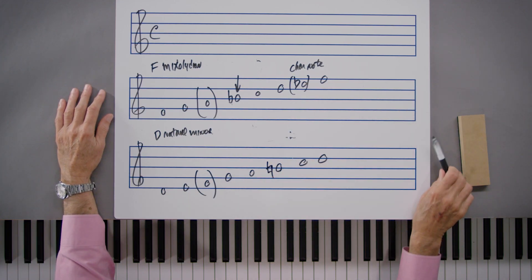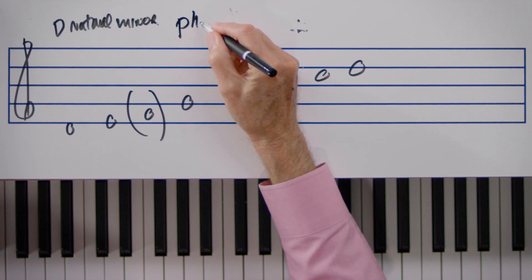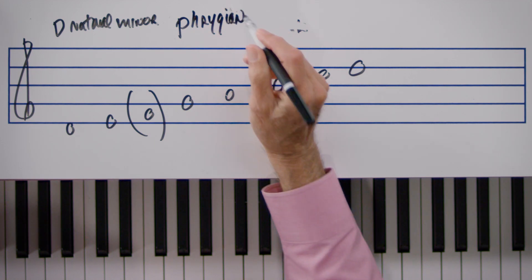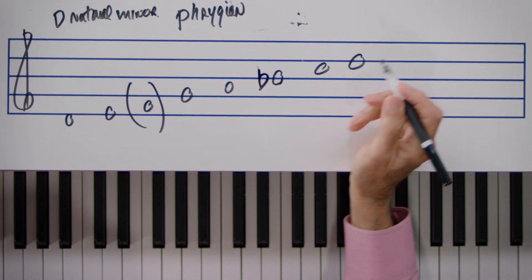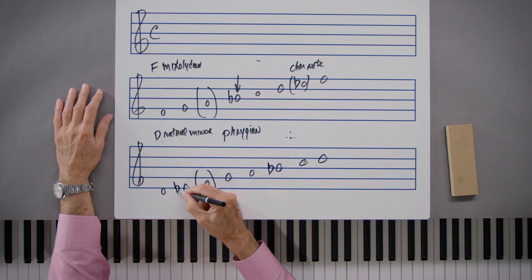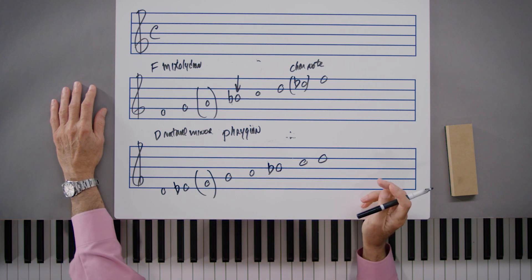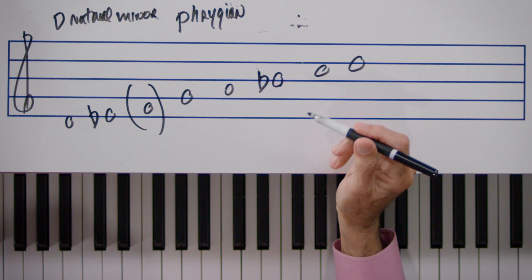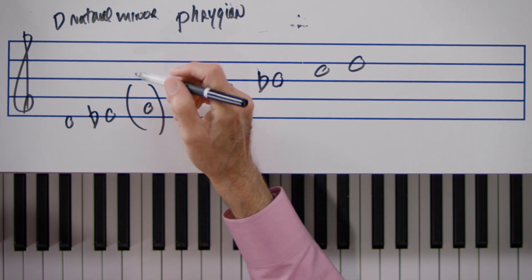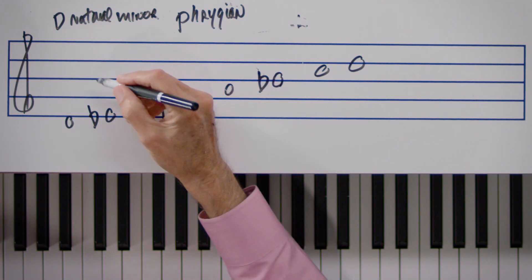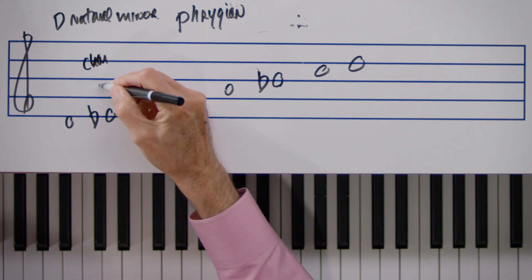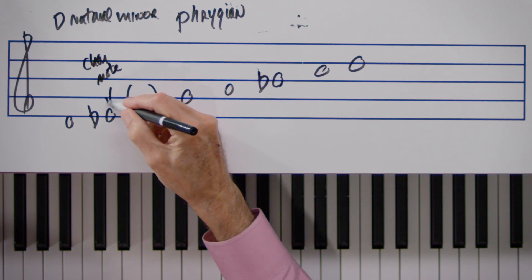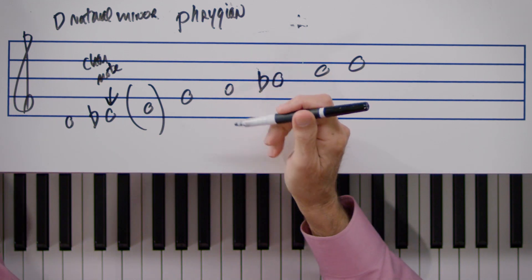There is a third minor scale that shares the F as the third, and it is identified as the Phrygian scale — spelled P-H-R-Y-G-I-A-N, pronounced Phrygian. In order to have a Phrygian scale we put back the B flat from D natural minor, but we also add a lowered second scale degree, which would be the note E flat. Here is the D Phrygian scale containing this E flat, the lowered second scale degree. That E flat becomes the characteristic note — that lowered second scale degree gives Phrygian a very unusual, strongly characteristic, and very different sound.